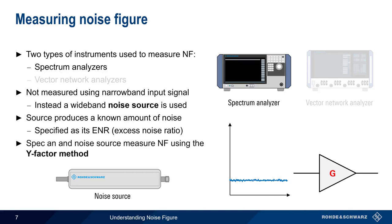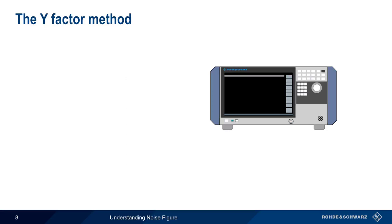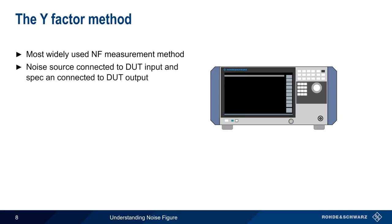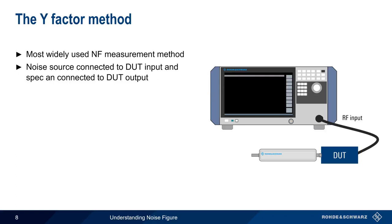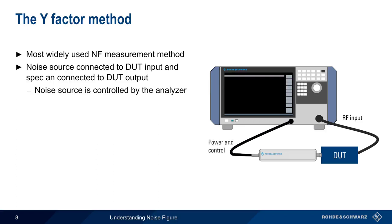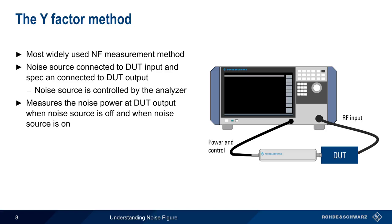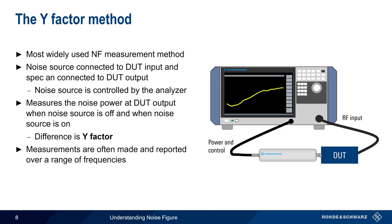The combination of a spectrum analyzer and a noise source can be used to measure noise figure using something called the Y-factor method. Y-factor is the most widely used noise measurement method. A noise source is connected to the device under test input, and the output of the DUT is connected to the spectrum analyzer's RF input. In almost all cases, the spectrum analyzer also controls and provides power to the noise source. The Y-factor method measures the noise power at the DUT output when the noise source is off, and then again when the noise source is on. The difference between these two measurements is called the Y-factor. Measurements are usually made and reported over a range of frequencies, since the noise figure of a device tends to be a function of frequency. And normally, the gain of the device under test is measured and reported as well.